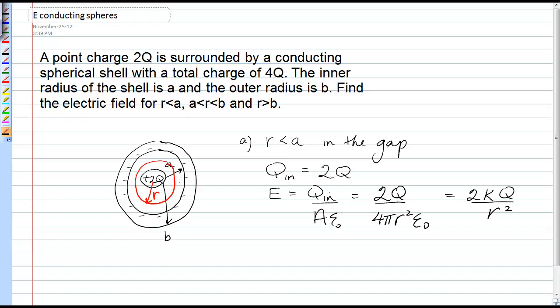But in this case, negative 2Q is induced on the inner surface of that shell, negative because it's exactly opposite to the positive 2Q at the center. Which means the outer surface, having had 4, having 2 pulled away like that...